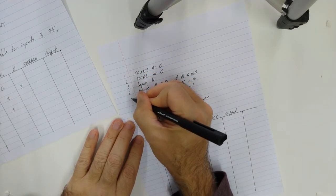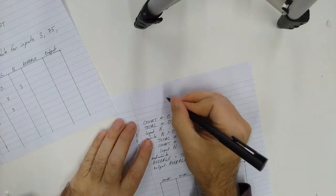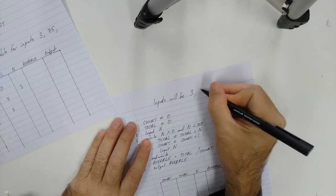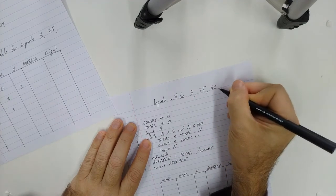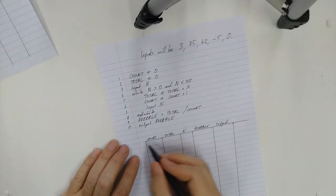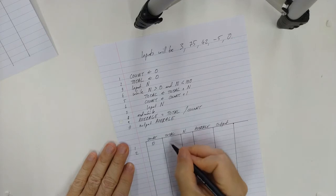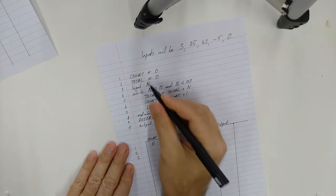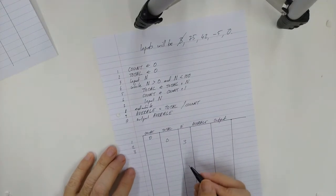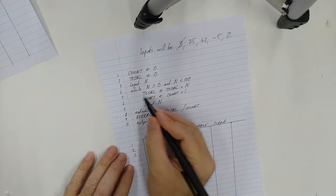Alright, line one, two, three, four, five, six, seven, eight, nine, and ten. And I'll just quickly write up the top here that my inputs will be 3, 75, 42, minus five, and zero. Will we get to that zero? So, line one. Count is getting set to zero. Line two. Total is being set to zero. Line three. Input n. So the first one is a three. So I'm going to put a three in here and then cross it off so I know that I've done it. Line four. While n is bigger than zero and less than 100, yes it is.